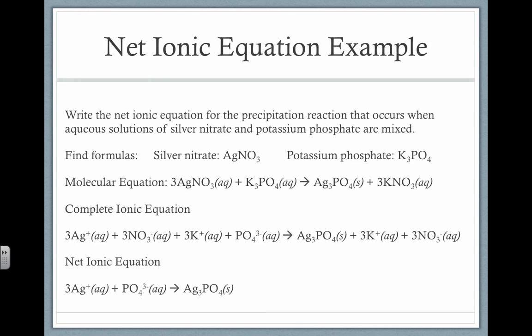Here's an example: silver nitrate and potassium phosphate mixed together. I write out the molecular equation — Ag⁺ combines with phosphate, K⁺ combines with nitrate — resulting in insoluble silver phosphate and soluble potassium nitrate. In the complete ionic equation, aqueous species are broken into ions and the solid stays intact. Potassium and nitrate are spectator ions, and eliminating them gives us the net ionic equation.